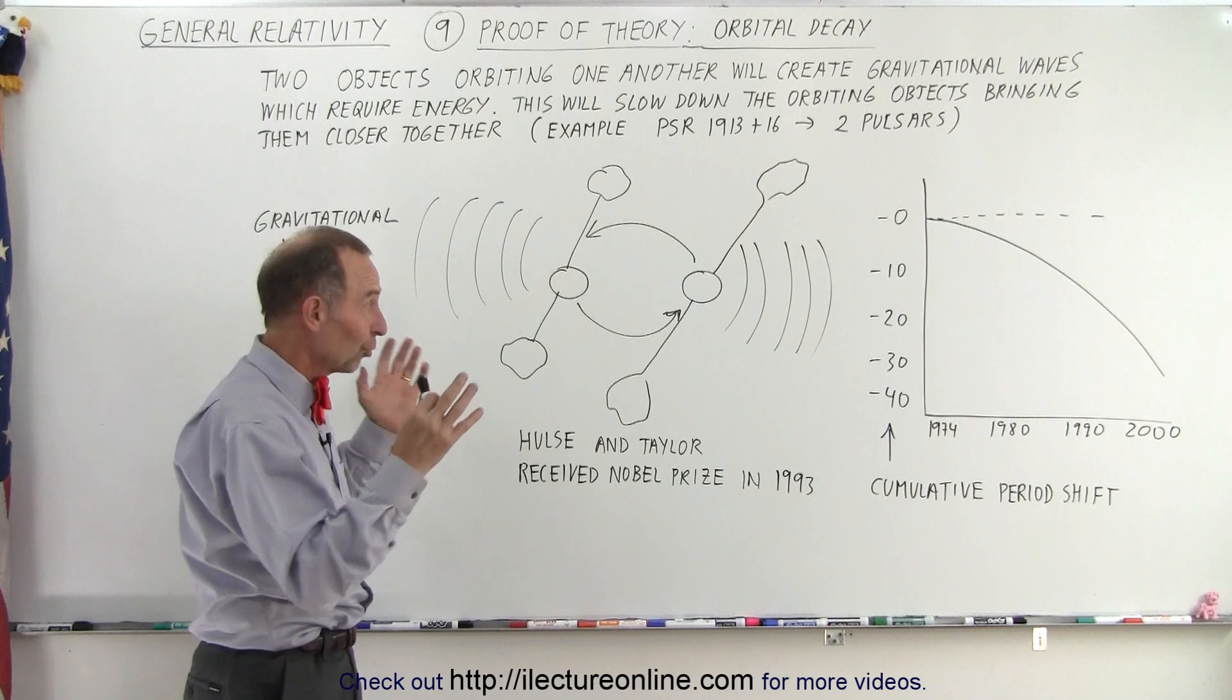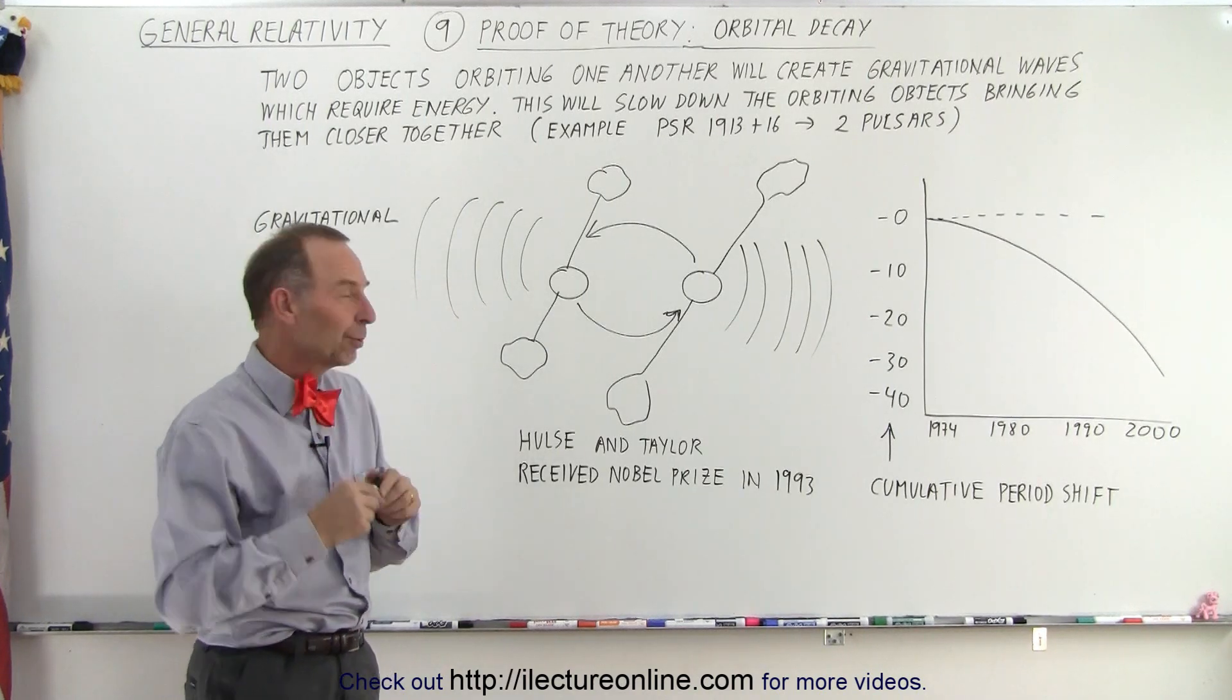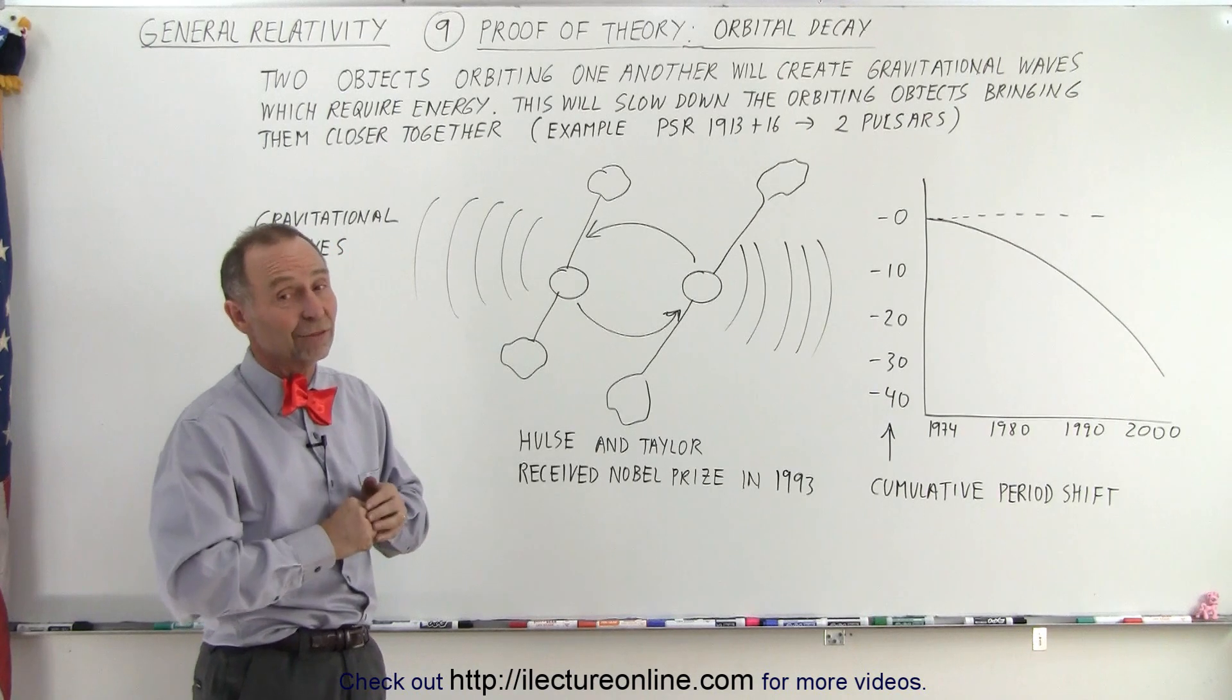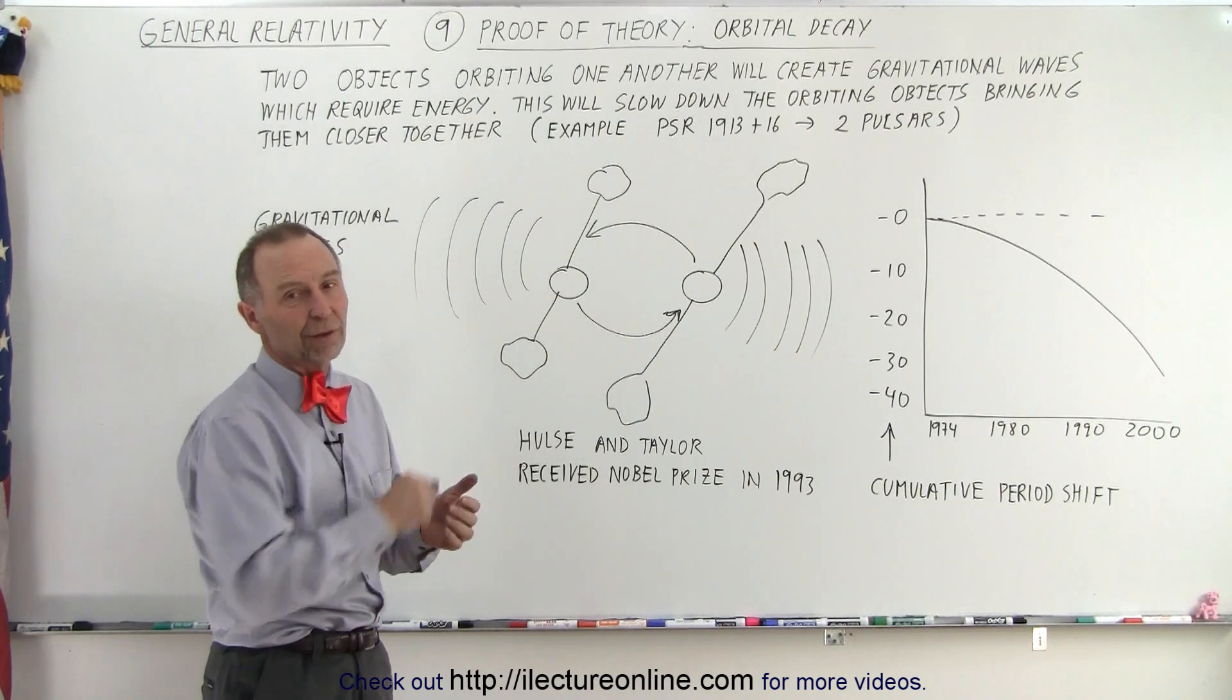Turns out, when two of those black holes collided with one another, that we were actually able to directly measure the gravitational waves. Here, we simply see the slowdown, we can't actually measure the gravitational waves.